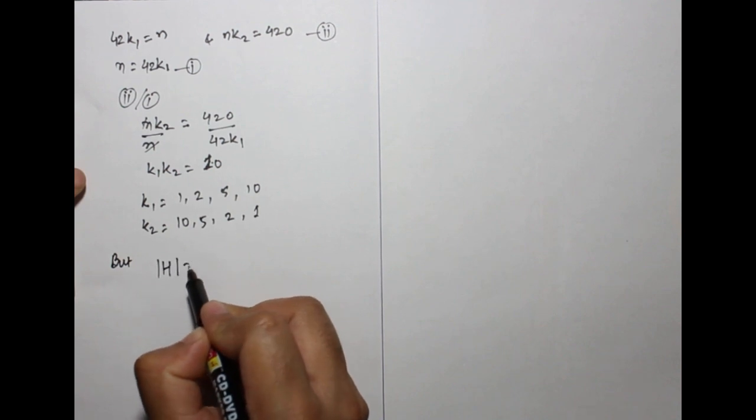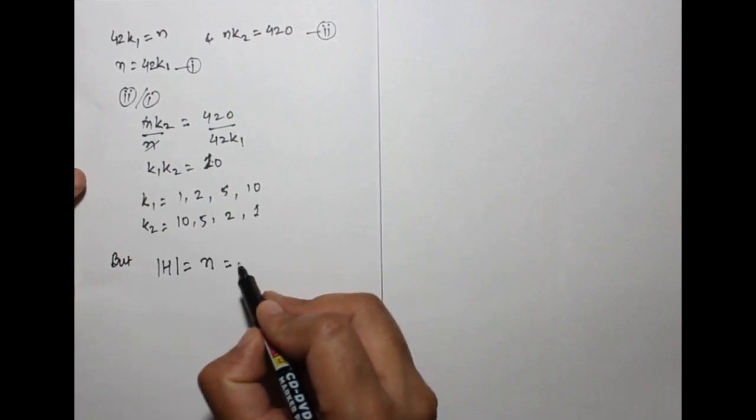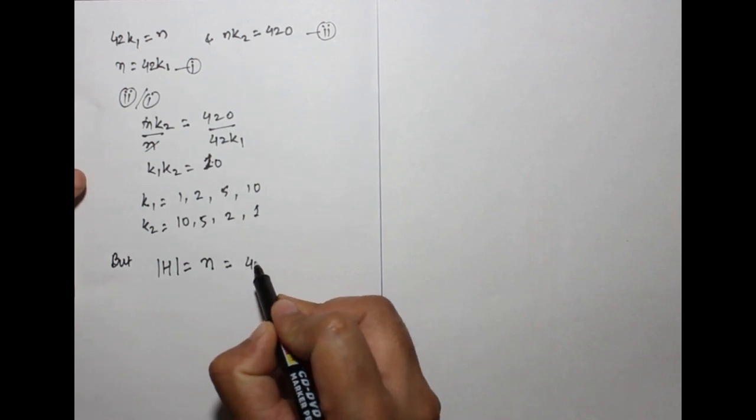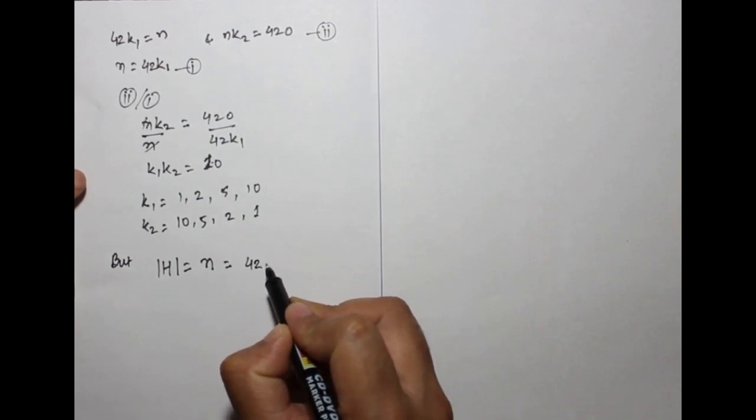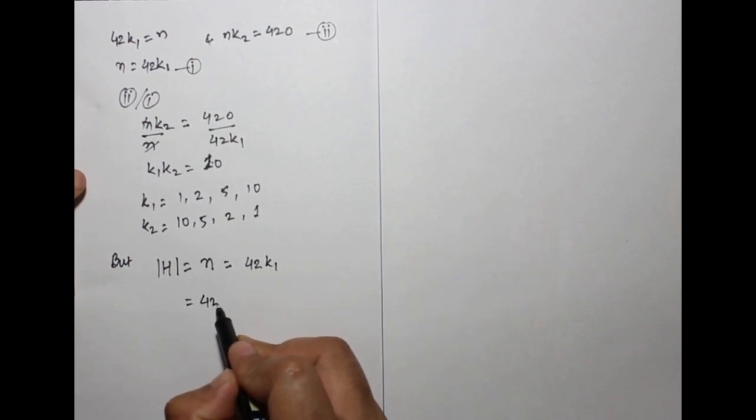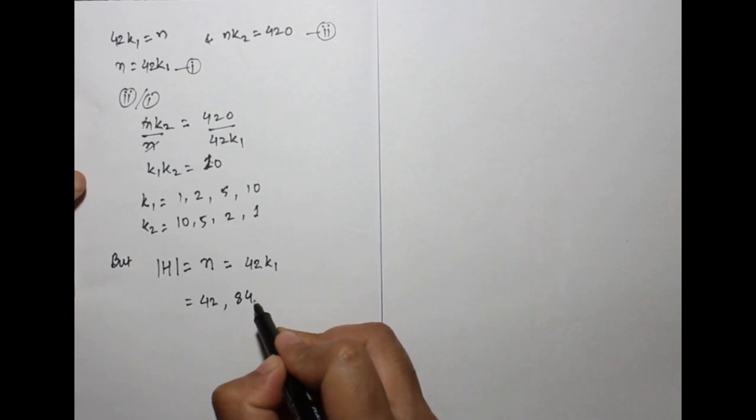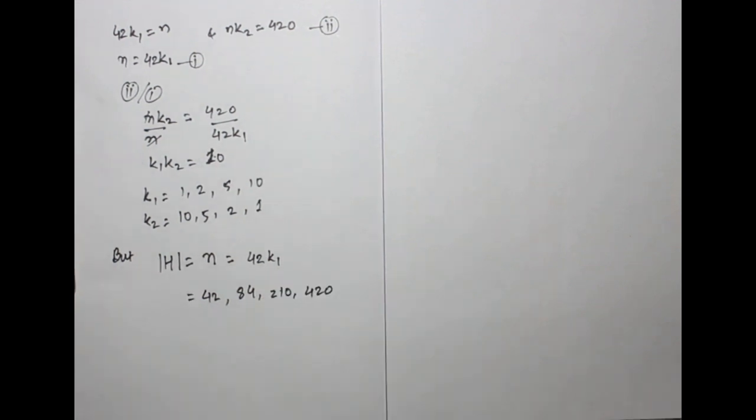But order of H equals to n, where n is 42 into k1. Now 42 into 1, 42 into 2, that is 84, 210, 420. These are the possible orders of H.